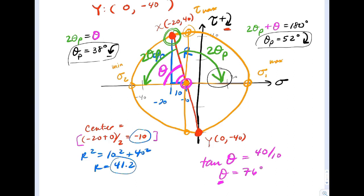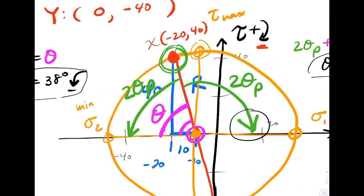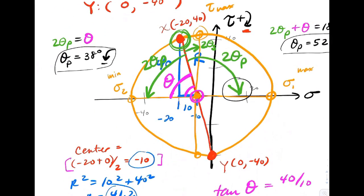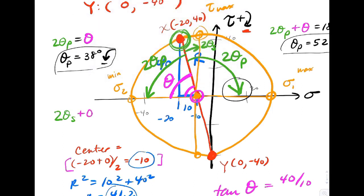I'm going to zoom in to find theta_s. I take the X-point and rotate it to tau max — that rotation is 2 theta_s. Using the pink theta: 2 theta_s plus the pink theta equals 90°. Solving that, theta_s = 7° clockwise.